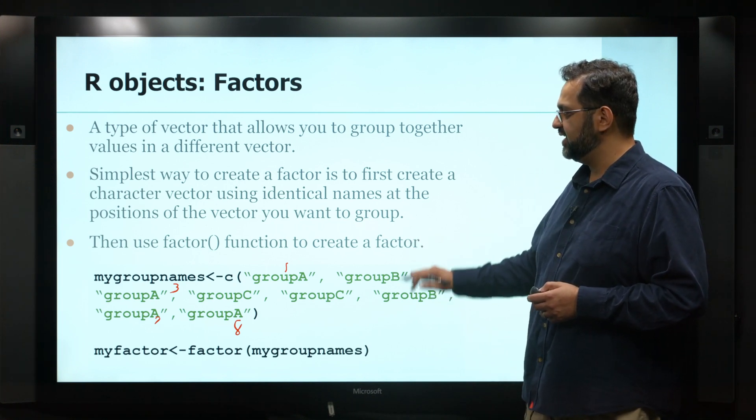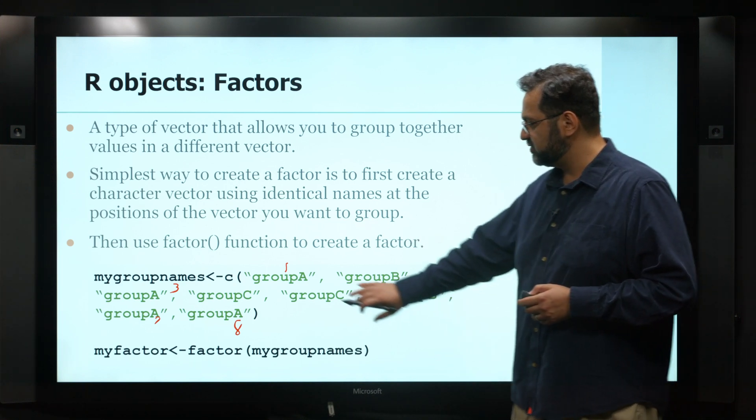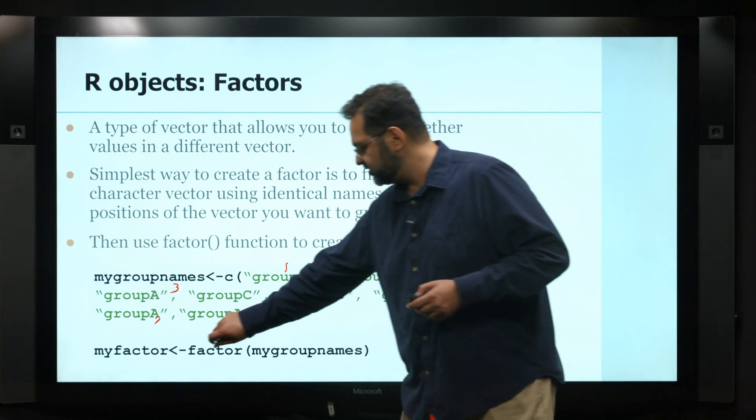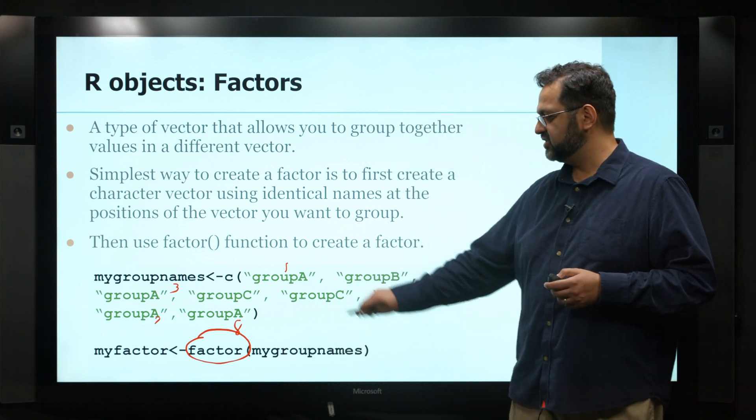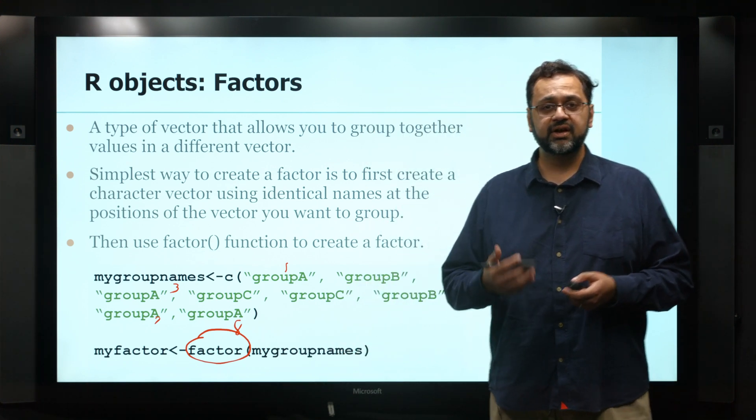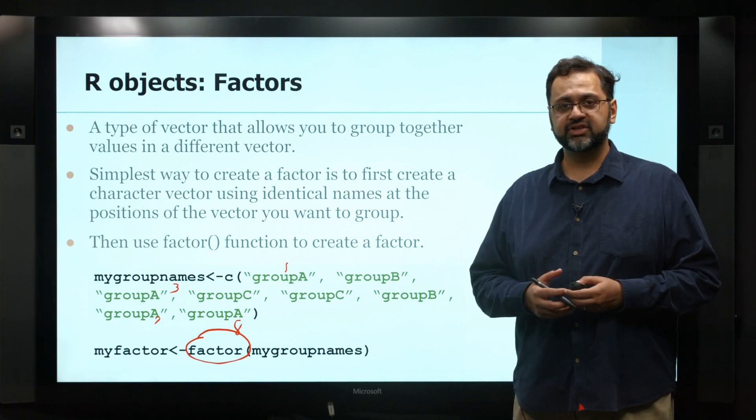So the easiest way to create these factors is to first create a character vector just like I've done here and then just use this factor command to convert this into a factor. And again in the live coding part you will see what kind of data structure it looks like.